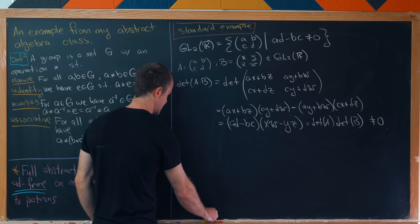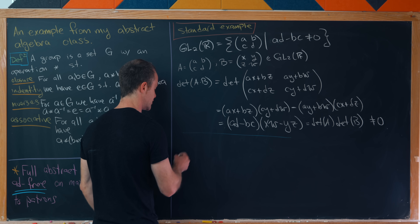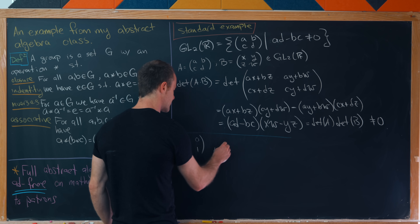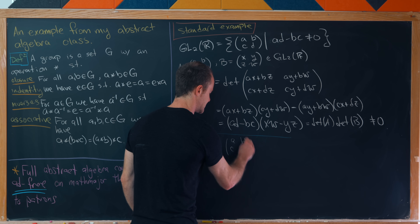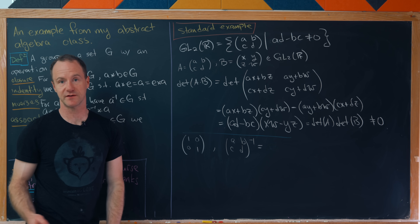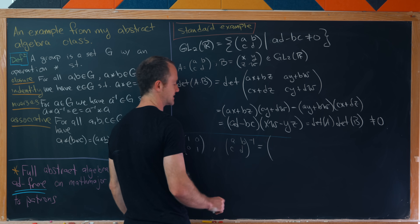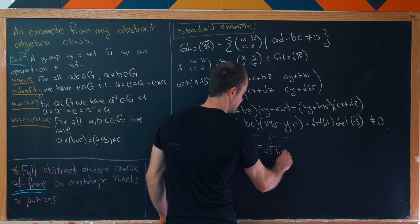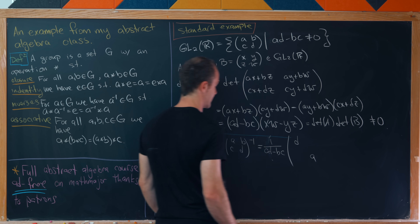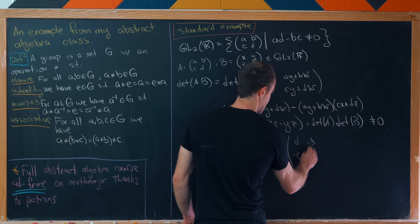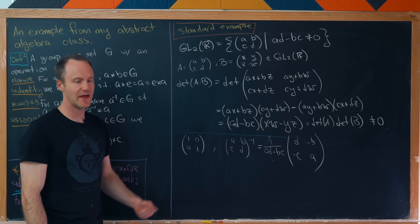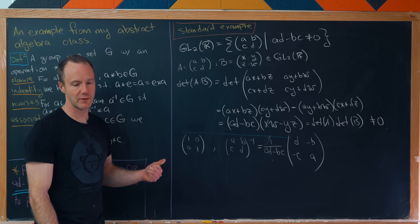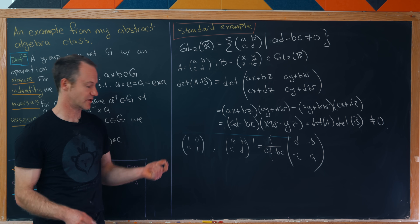For the identity axiom, the identity matrix [1, 0; 0, 1] is well known and works here. For inverses, there's a standard formula for the inverse of a 2×2 matrix: it's 1 over (ad − bc) scalar multiplied into the matrix where we swap the diagonals and negate the off-diagonals. Checking associativity is either a slog or pretty quick if you know the right trick, but we won't do that here. This is the standard example — what I really want to look at is a non-standard example of a matrix group.